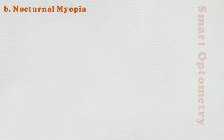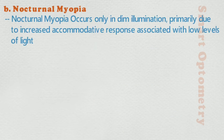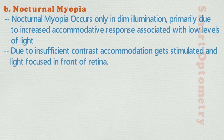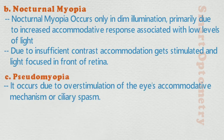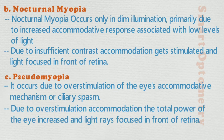B. Nocturnal myopia: occurs only in dim illumination, primarily due to increased accommodative response associated with low levels of light. Due to insufficient contrast, accommodation gets stimulated and light is focused in front of the retina. C. Pseudomyopia: it occurs due to over-stimulation of the eye's accommodative mechanisms or ciliary spasm. Due to over-stimulation of accommodation, the total power of the eye increases and light is focused in front of the retina.